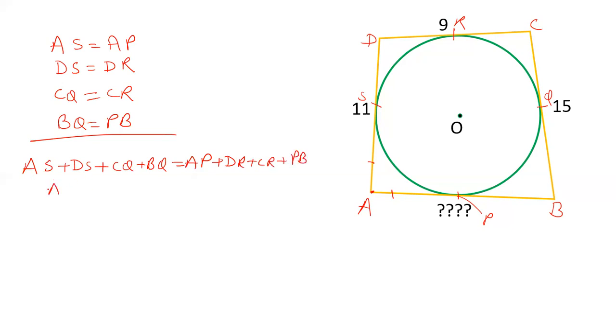AS and BS added gives AB. CQ and BQ gives BC. AP and PB gives AB. So for any such quadrilateral, the sum of opposite sides are equal: AB plus CD equals AD plus BC.